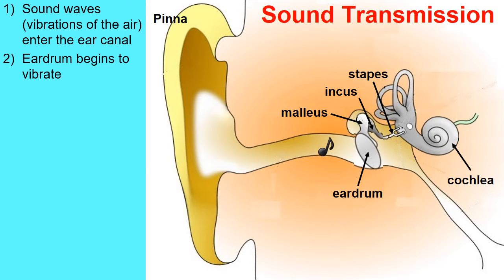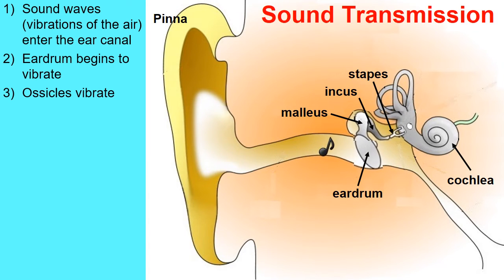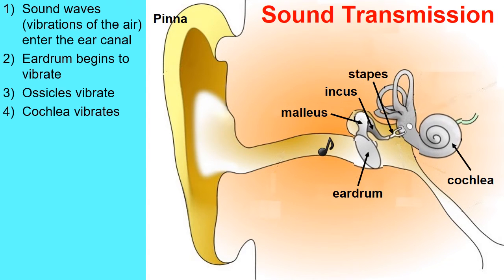In the animation, the vibrating of the eardrum is over-exaggerated so we can see it better. The sound waves that enter the ear canal cause the eardrum to vibrate. This causes those three bones collectively called the ossicles — the malleus, the incus, and the stapes — to vibrate as well.